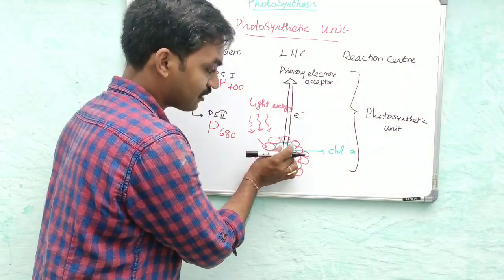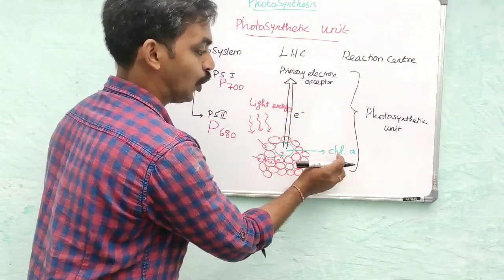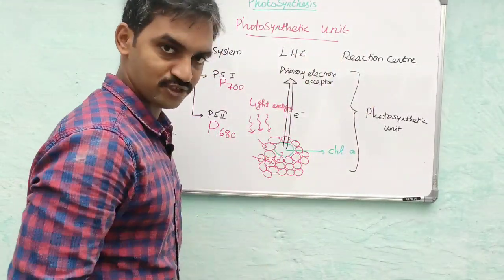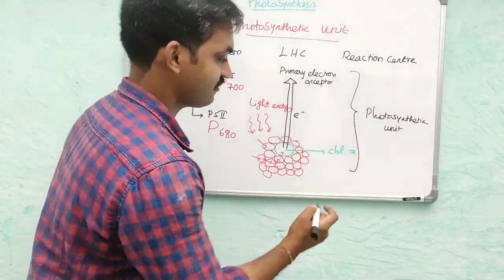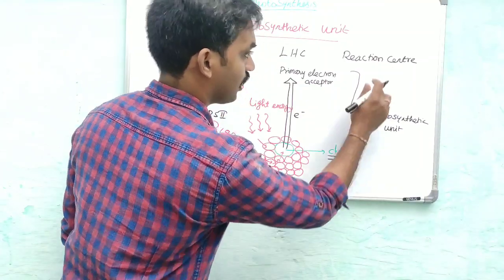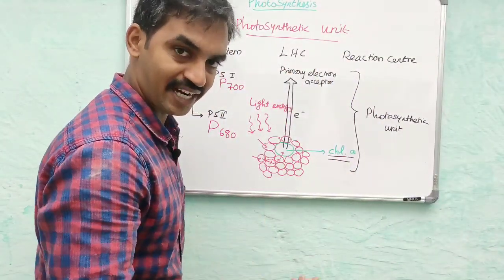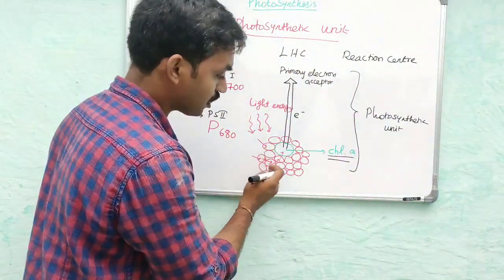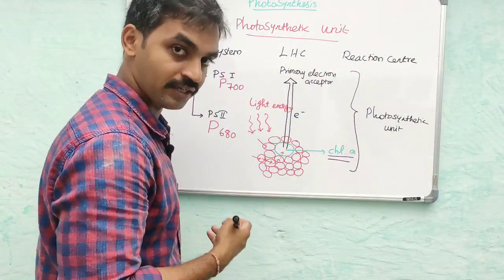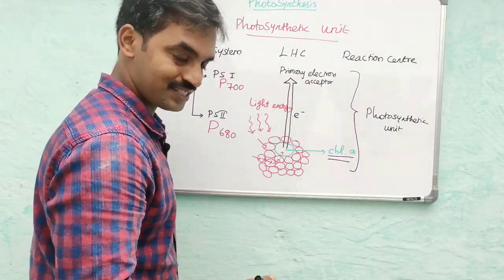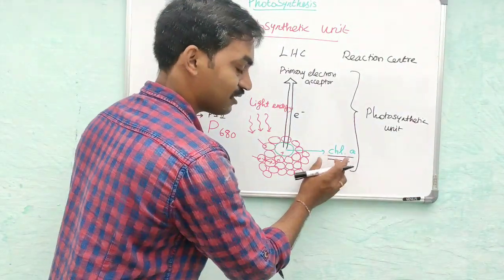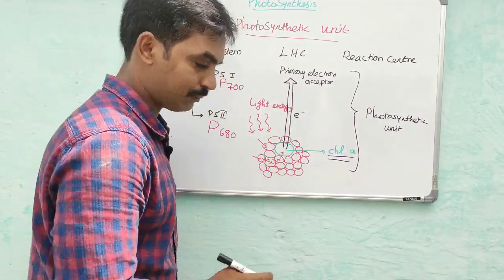Chlorophyll a is the reaction center or active center. Around the active center are accessory pigments such as carotenoids, chlorophyll b, and chlorophyll c. Pigments other than chlorophyll a are accessory pigments.